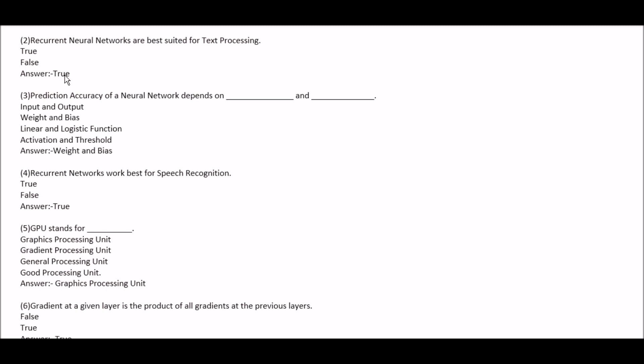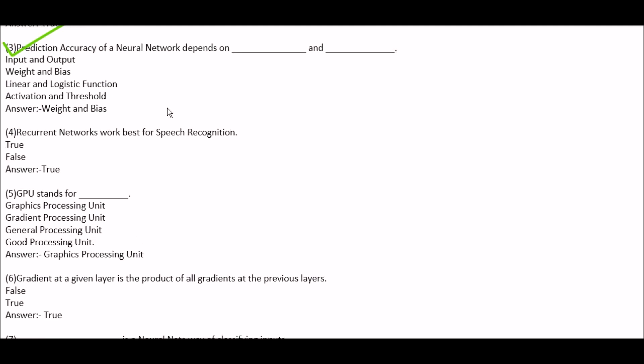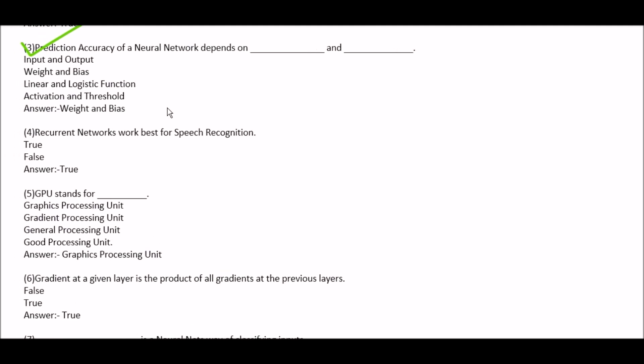Recurrent neural networks are best suited for text processing — true or false? The right answer is true. Third question: prediction accuracy of a neural network depends on blank and blank. Option A: input and output. Option B: weight and bias. Option C: linear and logistic function. Option D: activation and threshold. Right answer is option B, weight and bias.